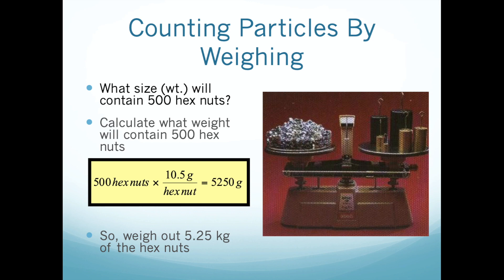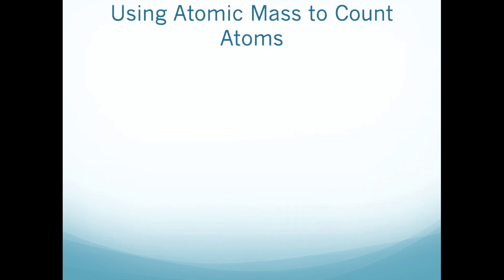Counting really small things by mass is a lot easier than trying to count out individual things. In the case of chemistry, counting out individual atoms and molecules isn't just difficult — it's pretty much impossible. We're dealing with things that are so tiny that you can't just pick them up and move them. So using mass to count numbers of things is very, very important.